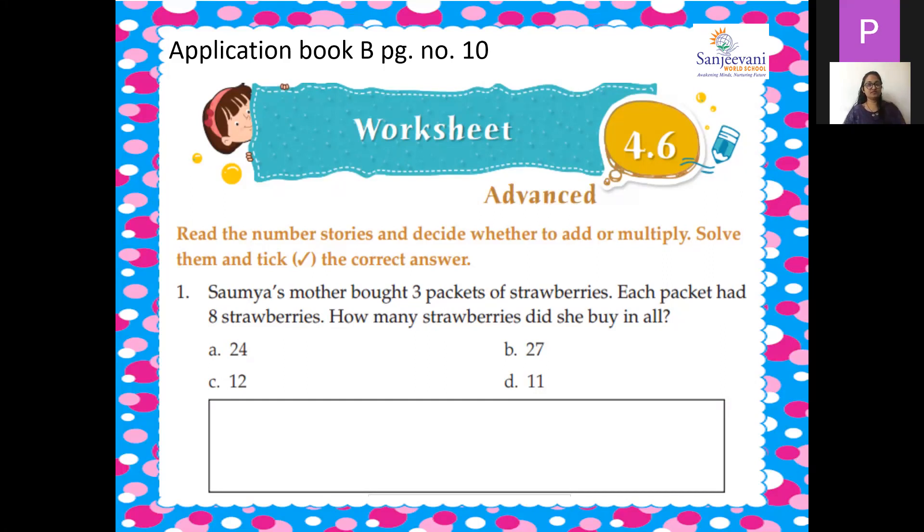So 3 eights are how much? Very good. 3 eights are 24. So we will do multiplication. So 3 eights are 24 strawberries and we will tick mark the correct answer. So now you can just pause the video and you can write down the answer in your application book children.